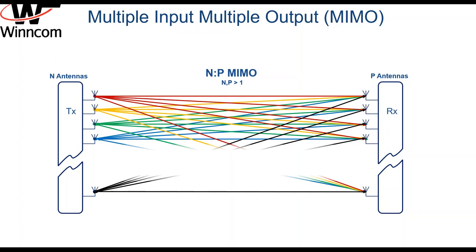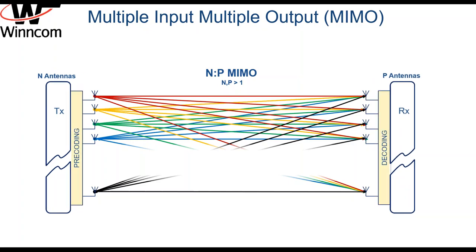MIMO systems use antenna arrays and they communicate over every antenna available on each end. The number of antennas does not have to be equal. In an N by P MIMO system, N designates the number of transmitting antennas and P designates the number of receiving antennas. Since each transmission can be received by each antenna on the receiving end, MIMO requires advanced signal processing techniques to be implemented. In a MIMO system, spatially diverse receiver antennas receive the same transmission with delays, so MIMO systems are already designed to handle delayed signals.